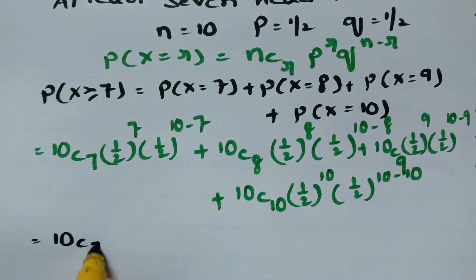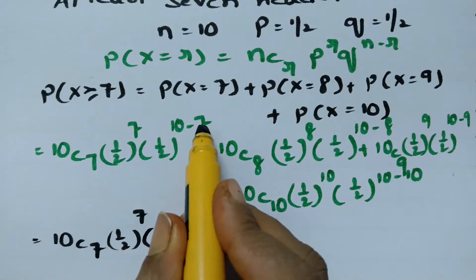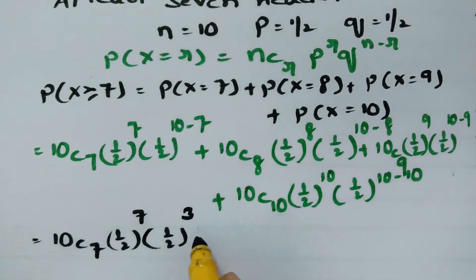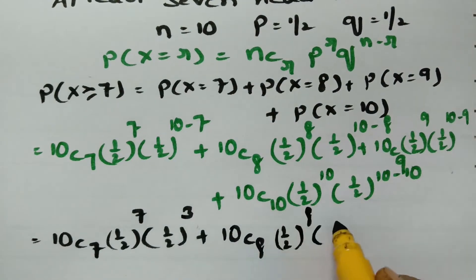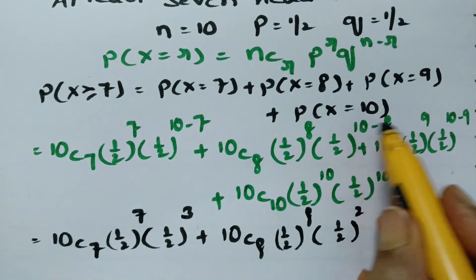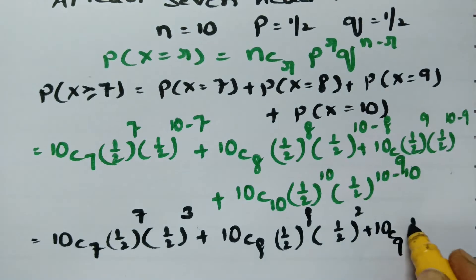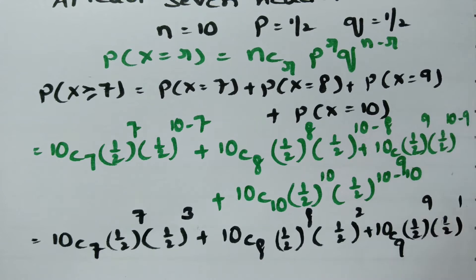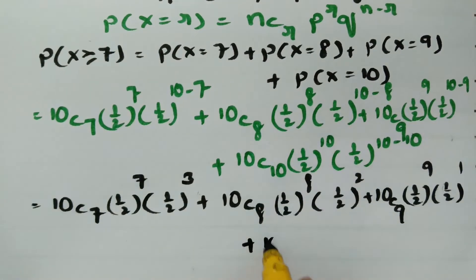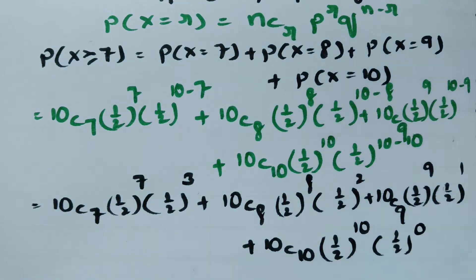So this is 10C7 times half power 7 times half power 3 (since 10 minus 7 equals 3). Plus 10C8 times half power 8 times half power 2 (since 10 minus 8 equals 2). Plus 10C9 times P power 9 times Q power 1 (since 10 minus 9 equals 1). Plus 10C10 times half power 10 times half power 0 (since 10 minus 10 equals 0).